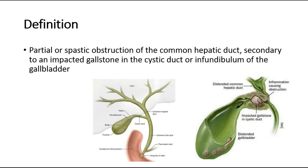This picture here shows the normal anatomy of the structures nearby the gallbladder. This is the gallbladder where there is the fundus, the body, the infundibulum, and the neck of the gallbladder. This passage is the cystic duct. At the upper part, there is the right and left hepatic duct forming the common hepatic duct. The cystic duct from the gallbladder will combine with the common hepatic duct to form the common bile duct.